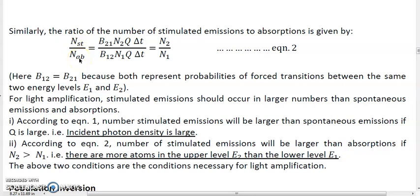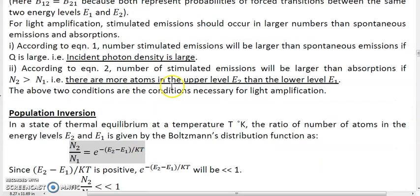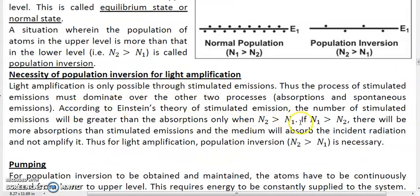When there are less stimulated emissions compared to absorptions, light cannot be amplified because when absorptions take place, photons are absorbed and photons become less. Light will not be amplified if absorptions are more than stimulated emission. Light will be amplified only when stimulated emission is more than absorption — that will happen only when N2 is greater than N1, which is population inversion. As per Einstein's theory, stimulated emissions will be more than absorptions only when N2 is greater than N1. If N1 is greater than N2, there will be more absorptions than stimulated emissions and the medium will absorb the incident radiation and not amplify it. Therefore, population inversion is absolutely necessary for light to be amplified.